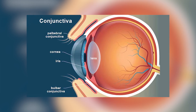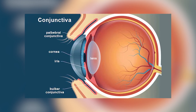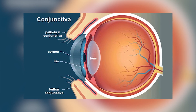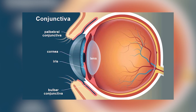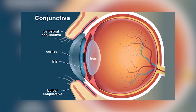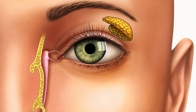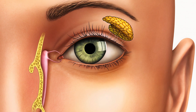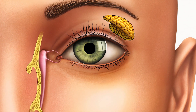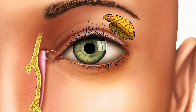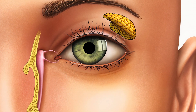The conjunctiva plays a vital role in lubrication and infection prevention. In tandem with these structures, the lacrimal apparatus produces tears that not only moisten the eye but also help remove any irritants, ensuring the cornea remains clear and receptive to incoming light.